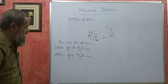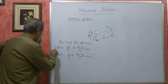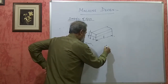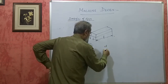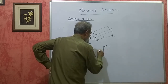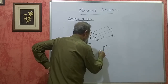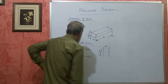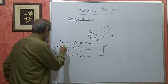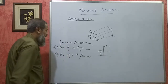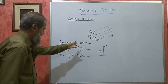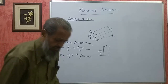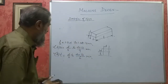Generally in our design data handbook, the width and thickness of the key are available if you know the diameter. There is a table — for a particular diameter, you can get the width and thickness directly. What you do not get from the table is the length L. L can be between 1.5D to 1.5D + 13 mm; these are empirical formulae which we use.